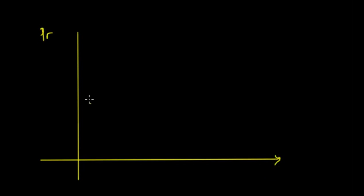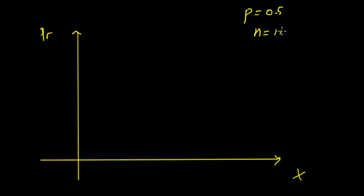The first example is the basic one. On one side we have the probability and on the other we have x — the number of successes. We'll say that the probability p is equal to 0.5, so the probability of success is half — this could be a coin toss. And we'll say that the number of trials n is equal to 10. The maximum x is going to be 10 because you can't have 11 successes when there are only 10 trials. There's going to be a center point and a mean. Where do you think the mean is going to be?